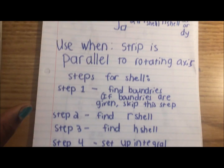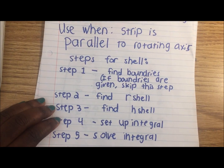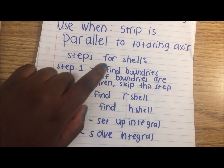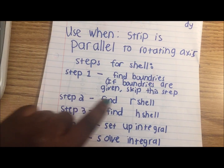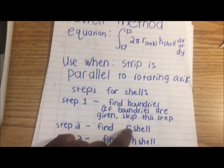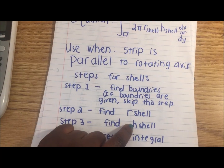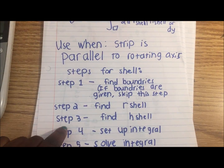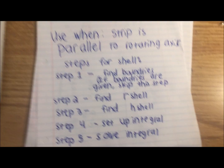Here are the steps for the shell method. First, you find the boundaries — if the boundaries are given, skip that step. Then you find r_shell, then you find h_shell, you set up the integral, and then you solve the integral.